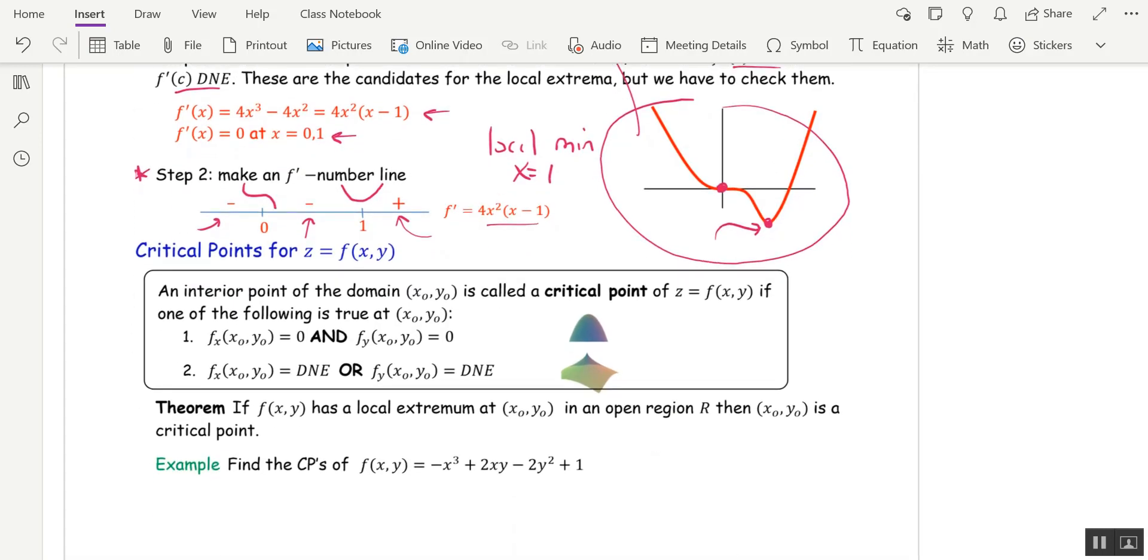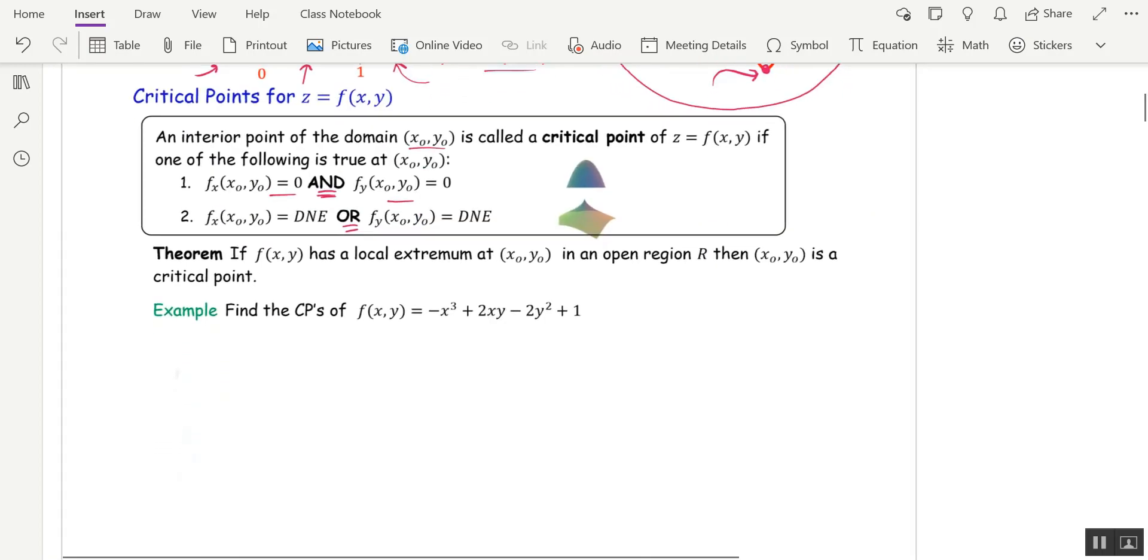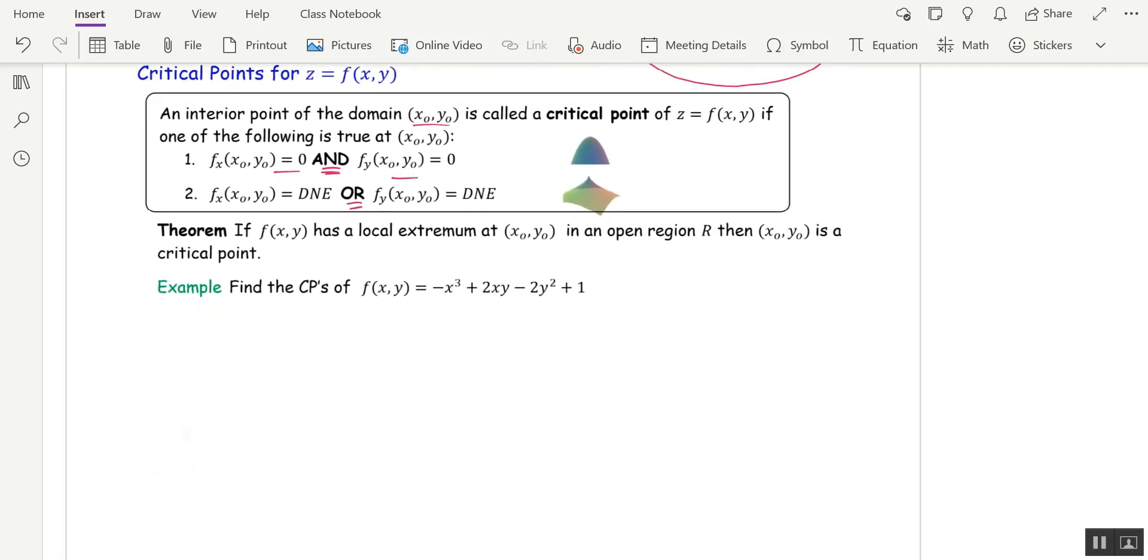The definition of a critical point is slightly different. Again, it has to be a point in the domain of the function. And it's a critical point if both partials are 0, so and, or one of the partials doesn't exist. So that's an or. Those are going to be the places we have to check for local maxes, local mins, or saddles.